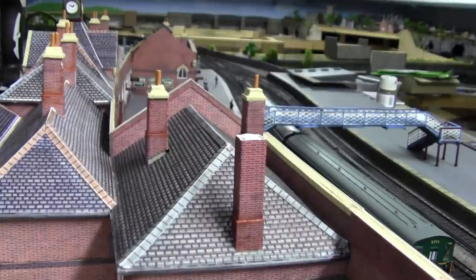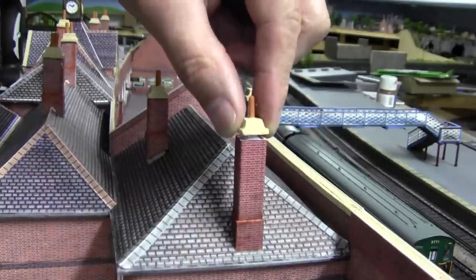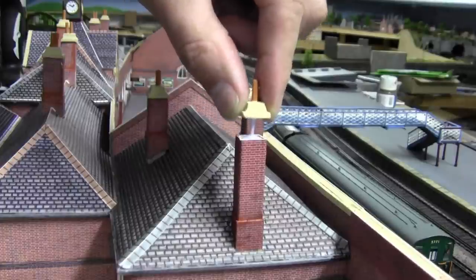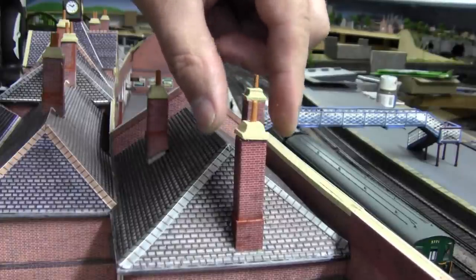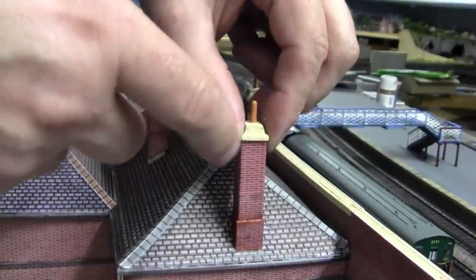And what we do now is we just get the toothpick and just push it up and down. What happens then—the glue will hopefully sink into the chimney pot.